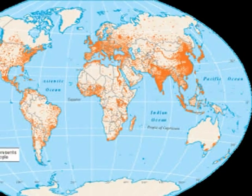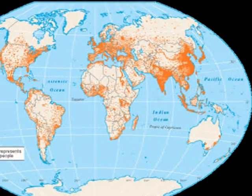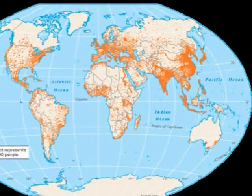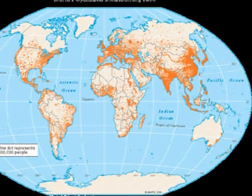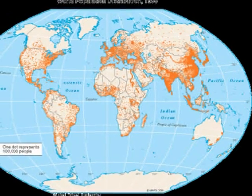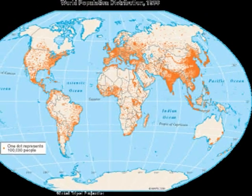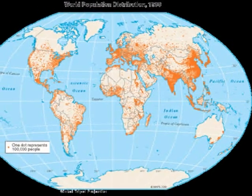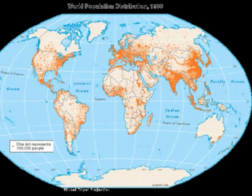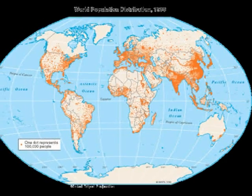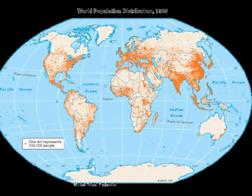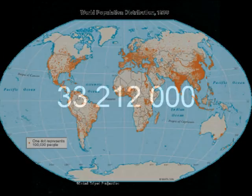But when population began, humans didn't establish equal distribution. People gathered in places more favorable at the time. Because of this, there are certain places with a higher population than others.